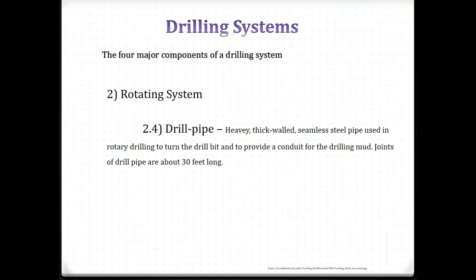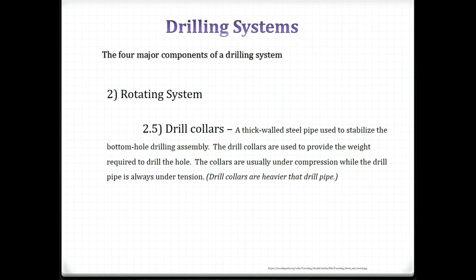Drill pipe is heavy, thick-walled, seamless steel pipe used in rotary drilling to turn the drill bit and to provide a conduit for the drilling mud. Joints of drill pipe are about 30 feet long.